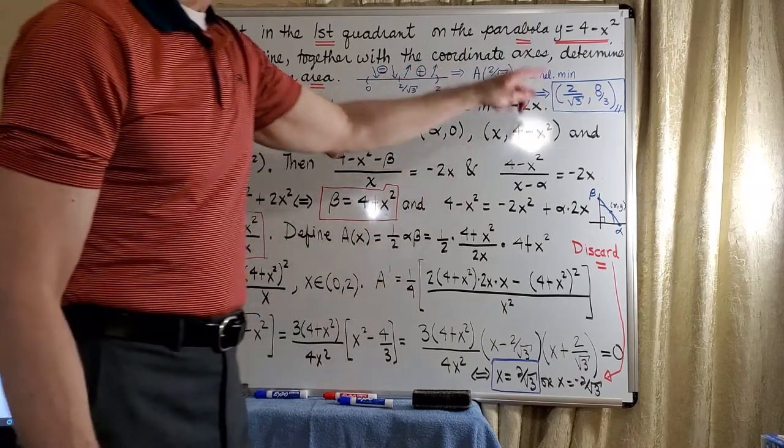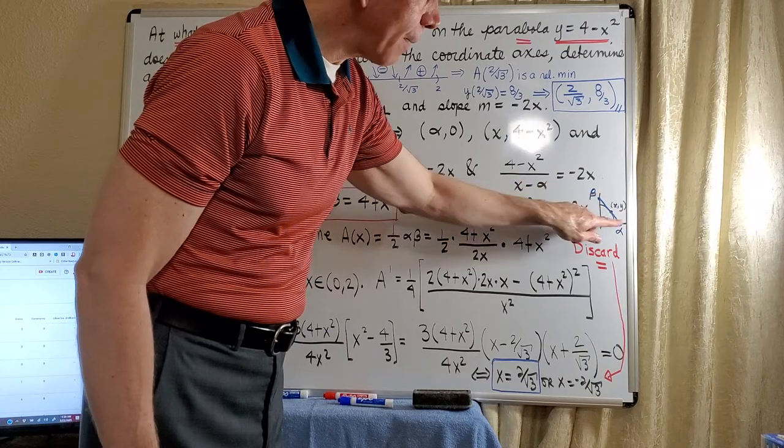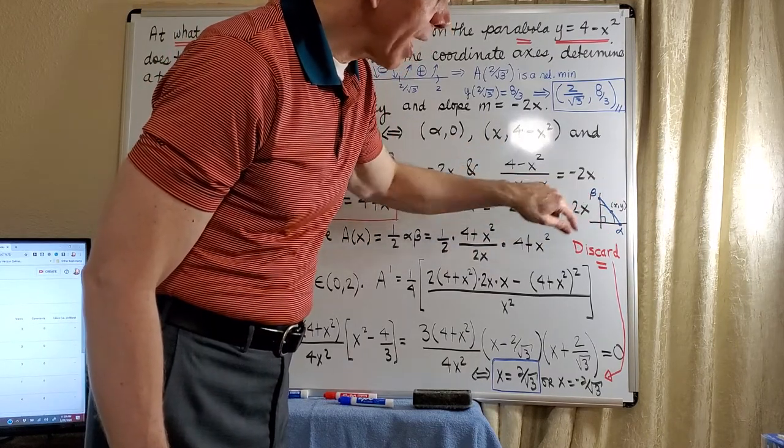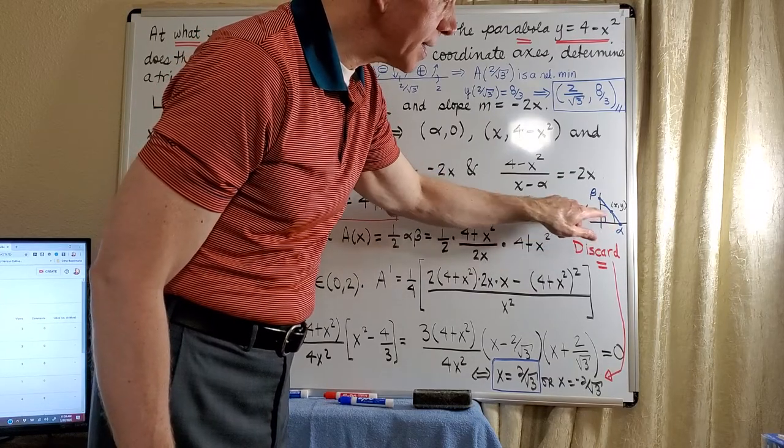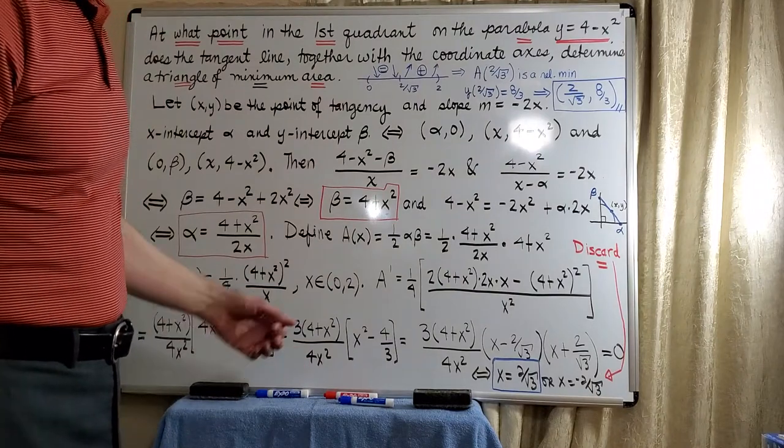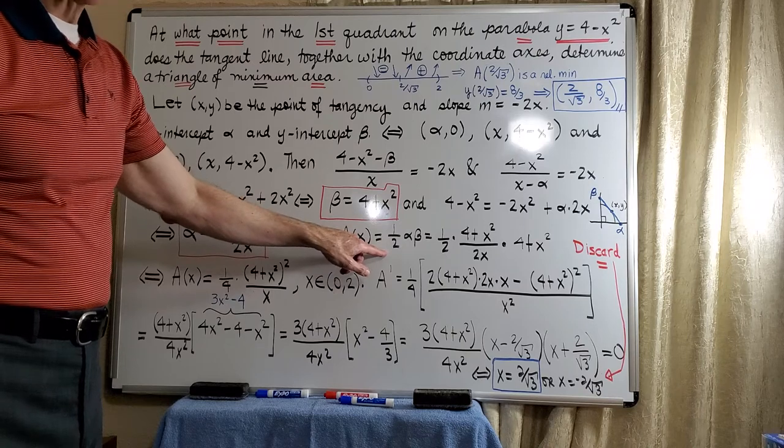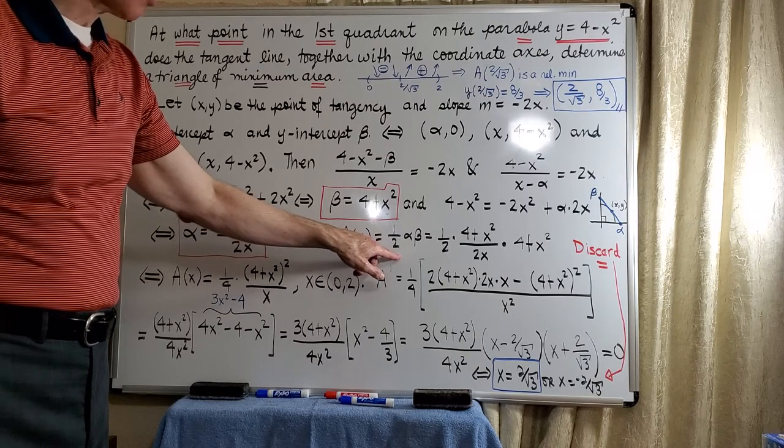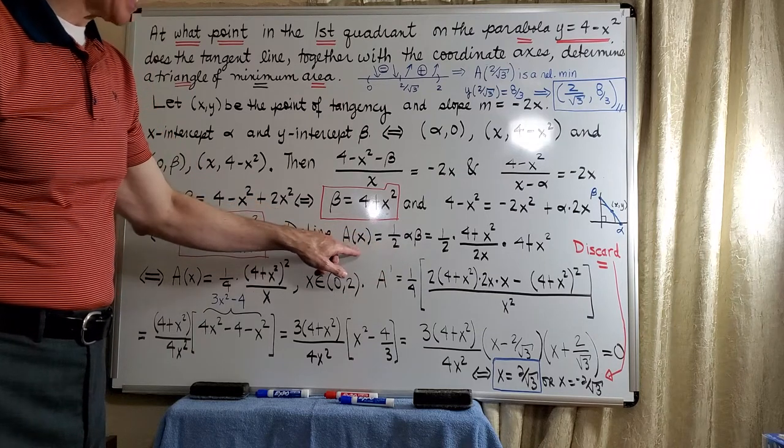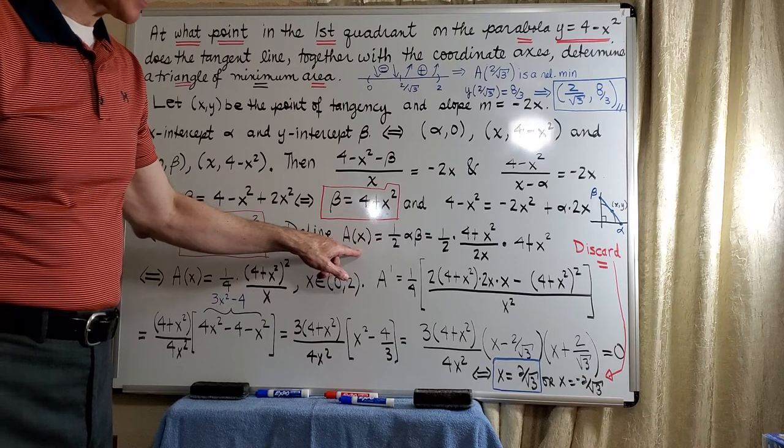If you think of this quadratic function here, and you think of the tangent line as being the hypotenuse of this triangle, you see that the x and y-intercepts actually will give you the base and the height of the triangle. So what's going to happen is that eventually we will define our function to be the area of the triangle, which will have formula one half alpha times beta, but we have to see how this configures with the actual curve, y = 4 - x².